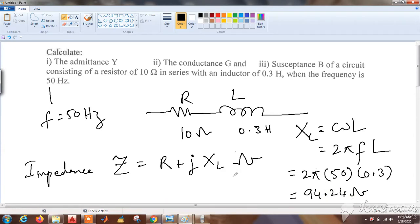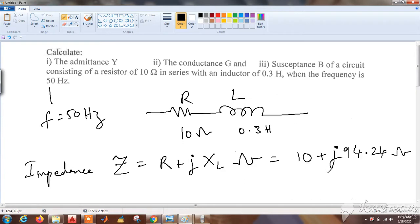Let us substitute R and XL in impedance. This gives our impedance as 10 plus j94.24 ohms.